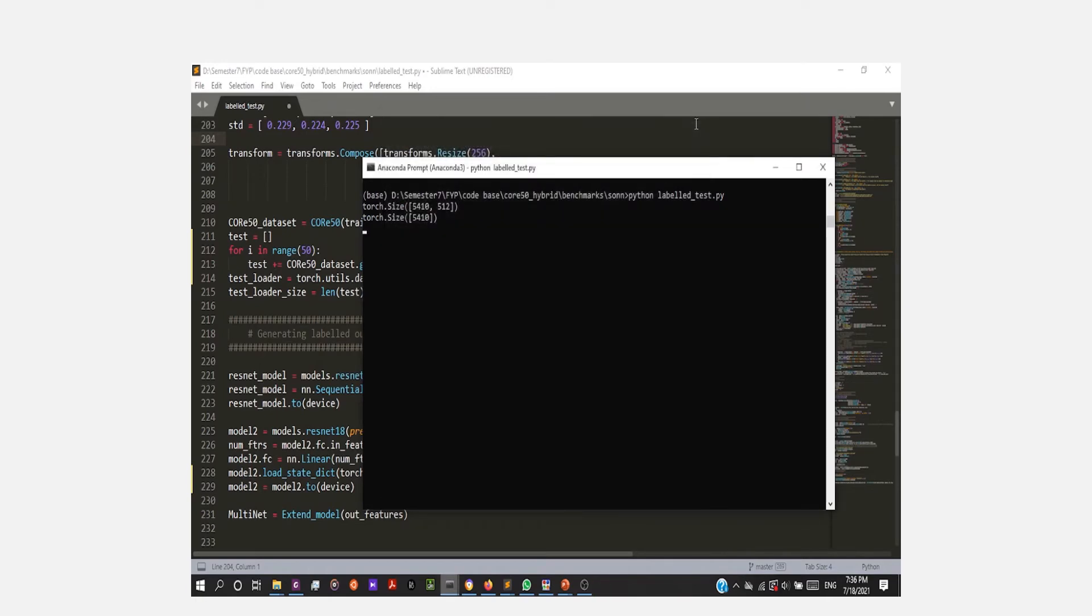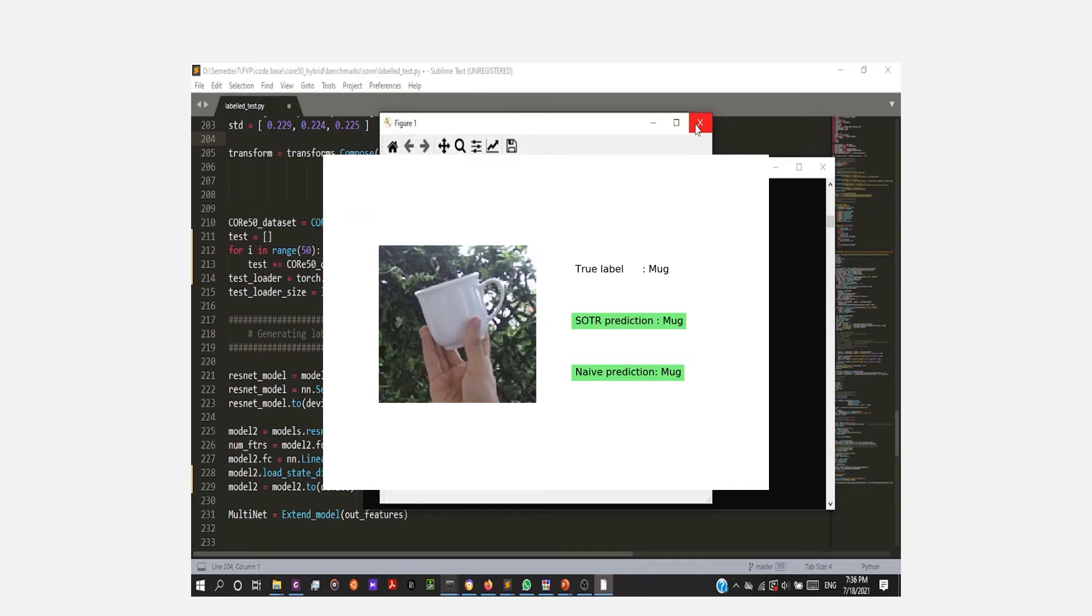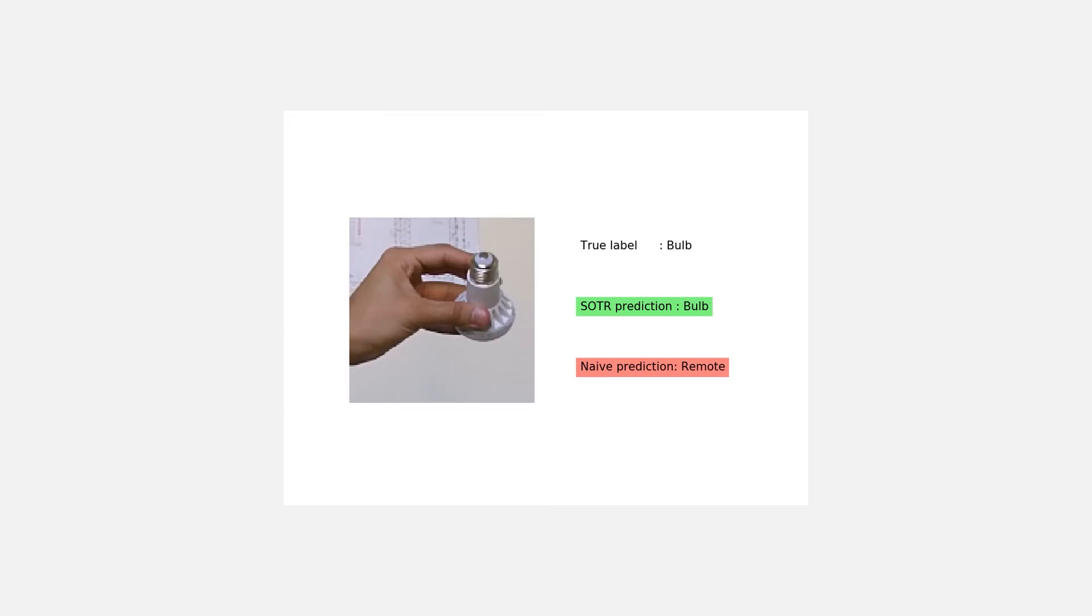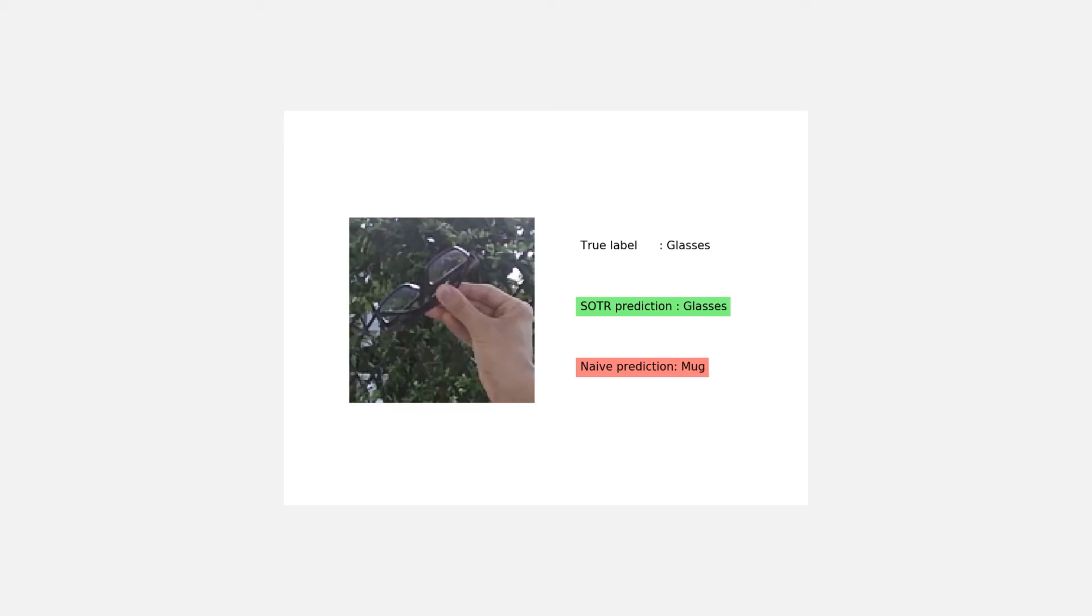We can observe that our model is able to retain all the previous task knowledge. Also, we can observe the fact that the naive method keeps predicting only the task which has been trained last, which identifies the mug and the remote. Only those two labels have been predicted by the naive method.